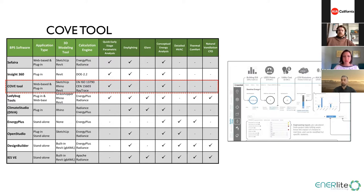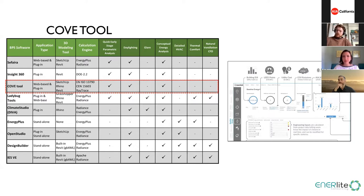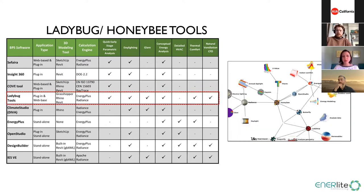COVTool is another web-based tool with plugins for SketchUp, Rhino, and Revit. It uses different engines from most other tools — engines used primarily in Europe. For daylighting it uses ray trace rather than Radiance, but it is validated to have about 5% difference from Energy Plus and Radiance energy modeling. COVTool provides really quick simulation and is good for every stage of modeling. It performs daylighting analysis but not glare analysis, and conceptual energy modeling is also possible.